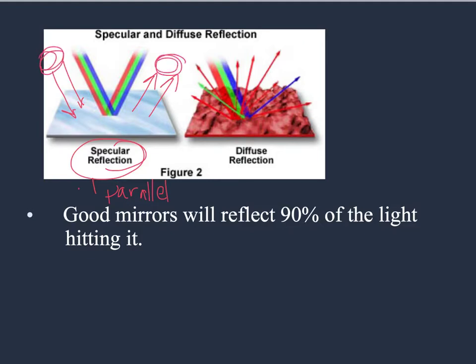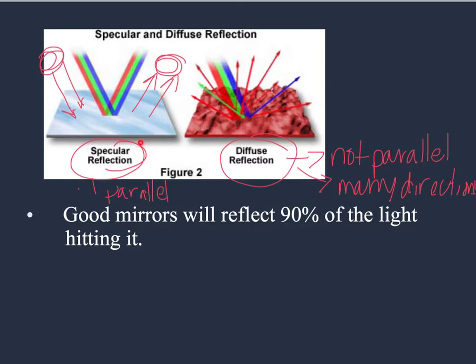In a diffuse reflection, you'll notice all the colors go in different directions. So diffuse is not parallel, and it goes in many directions. But 100% of the light doesn't have to be transferred in order for it to be specular and for us to get a good image. Good mirrors will reflect 90% of the light that hits it.